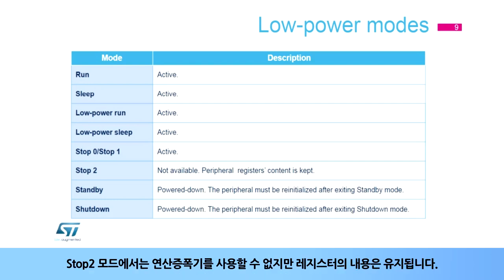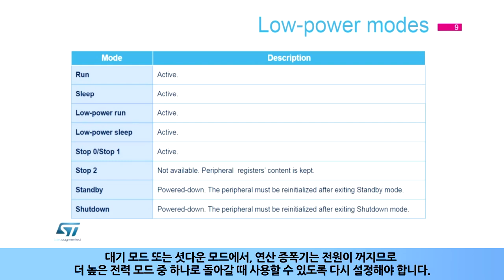In stop two mode, the op-amp is not available, but its register contents are kept. In standby or shutdown modes, the op-amp is powered down and must be re-initialized for use if returning to one of the higher-powered modes.